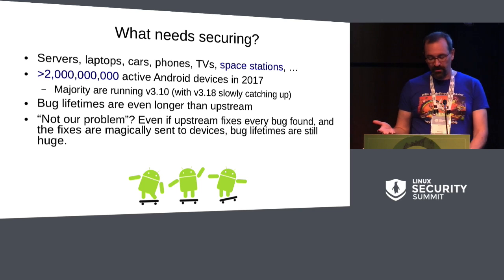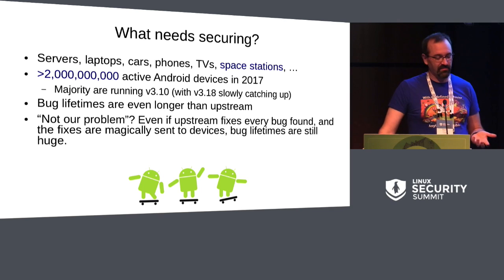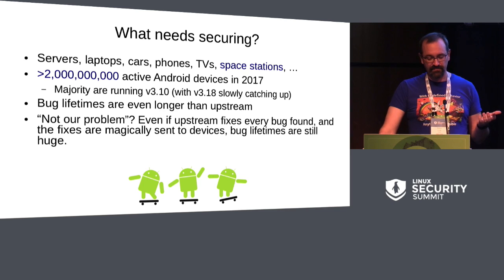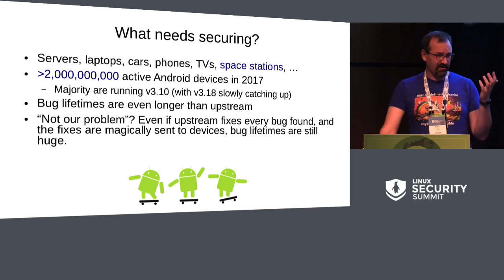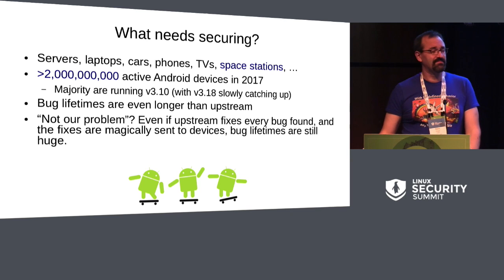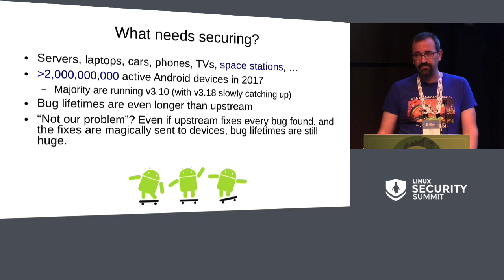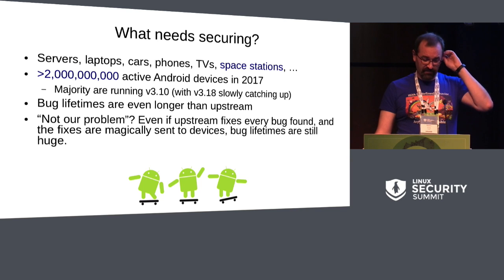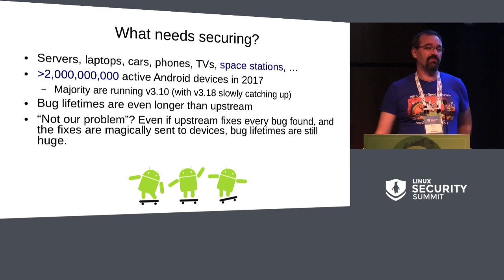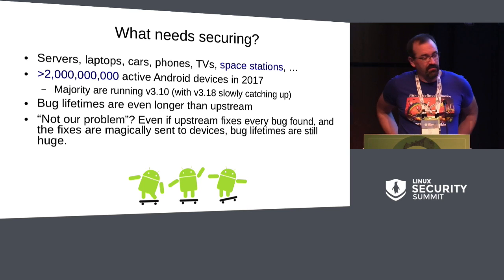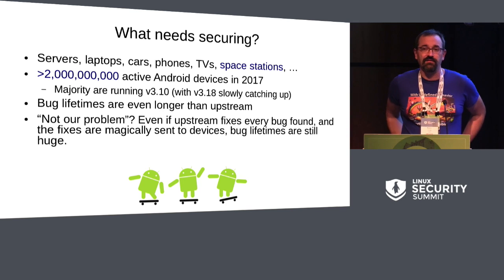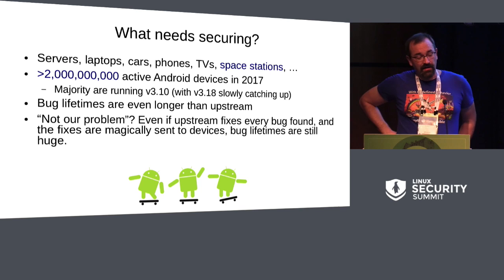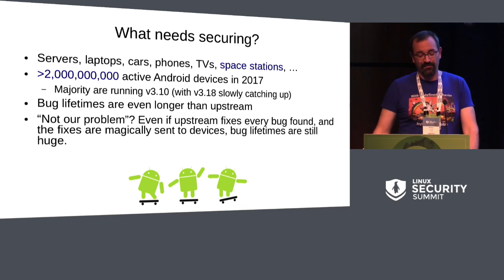What are we actually protecting? What are we trying to secure? The justification for this work: we've got 2 billion Android devices. There's now a Linux supercomputer on the International Space Station. We've got a lot of stuff running Linux. A scary note: the vast majority of those Android devices are running a 3.10 kernel, which is extraordinarily old. Luckily, 3.18 is quickly catching up — so we've gone from ancient to very old.